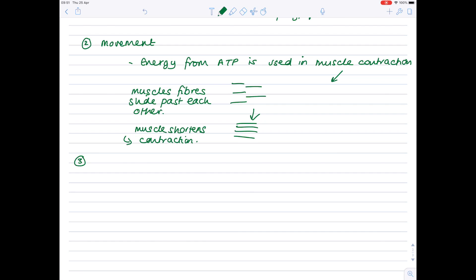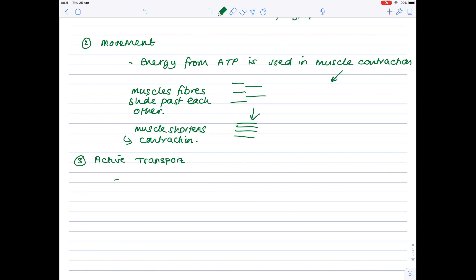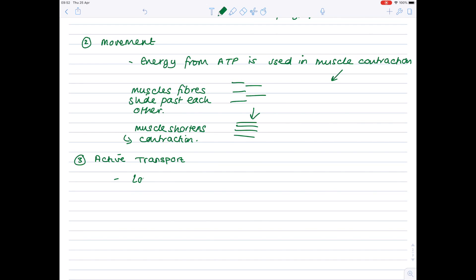The third ATP use, probably one of the most obvious ones for you guys, active transport. Which, remember, is the movement of molecules or ions against the concentration gradient, so from an area of low concentration to high concentration.